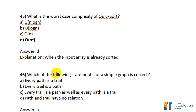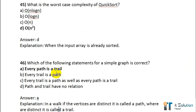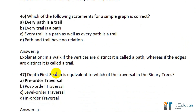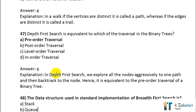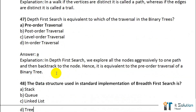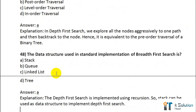Question number 46: Which of the following statements for a simple graph is correct? Its correct answer is option A — every path is a trail. Question number 47: Depth-first search is equivalent to which traversal in a binary tree? Option A — pre-order traversal. Question number 48: The data structure used in the standard implementation of depth-first search is — its correct answer is option A — stack.